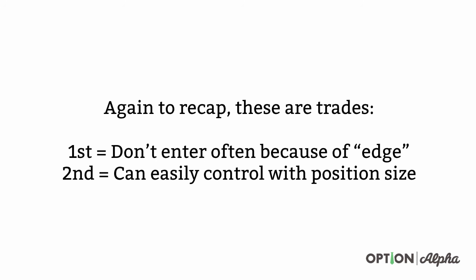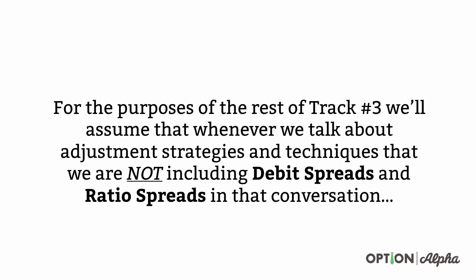For the purposes of the rest of track three, we'll assume that whenever we talk about adjustment strategies and techniques, we're not including debit spreads and ratio spreads in that conversation. This is not to say that you can't make adjustments to these — there are techniques by which you can make adjustments to debit spreads and ratio spreads. We just assume that most of the time, 95 percent of the time that you're trading, you're going to be a net seller of options, and those are the positions you want to focus on. They're going to be a bigger portion of your portfolio and the core strategies that generate income. Ratio spreads and debit spreads are going to be a very small part of your portfolio, if at all, and therefore, to use your time wisely and be as efficient as possible, we just don't adjust them all too often.